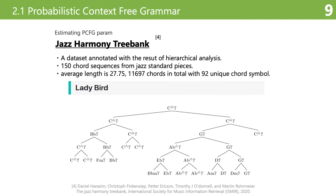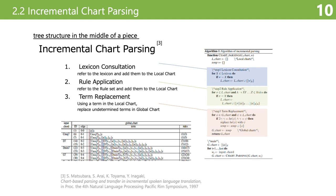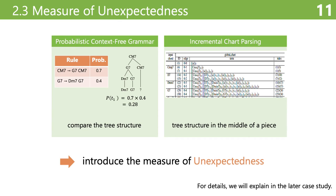To estimate the probability parameters, we use the Geerdes-Hamanee treebank. The Geerdes-Hamanee treebank is a dataset of hand-annotated syntax trees for jazz pieces. We estimated the probability parameters by counting the syntactic rules used in these corpora. Next, I'll be talking about the incremental chart parsing. Incremental chart parsing is a method devised for natural language processing that can express the state in the middle of parsing. Without going into details of our algorithm, this is accomplished by storing the result of the analysis at each step in a chart. With these extensions, we can introduce the measure of unexpectedness. I'll give you more details of our definition in the next section with analyzing a piece. Before moving on, let's talk about the proposed system.